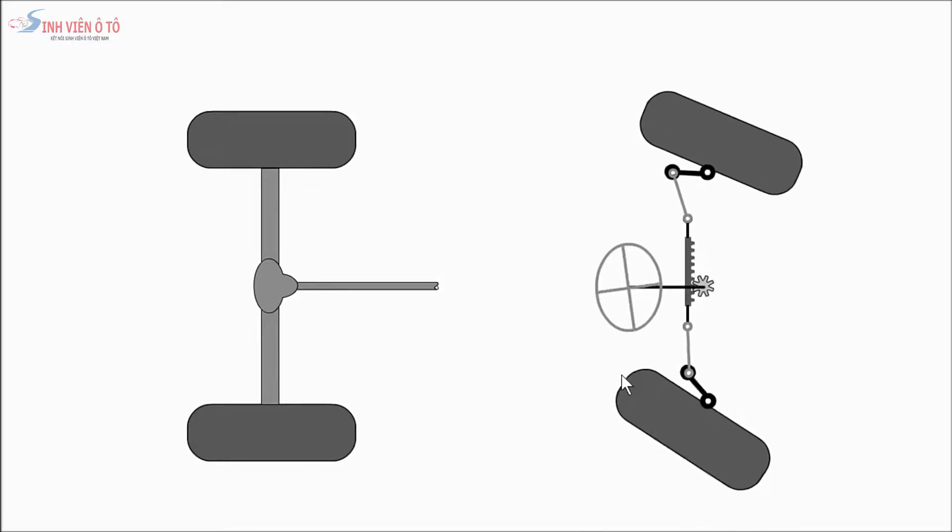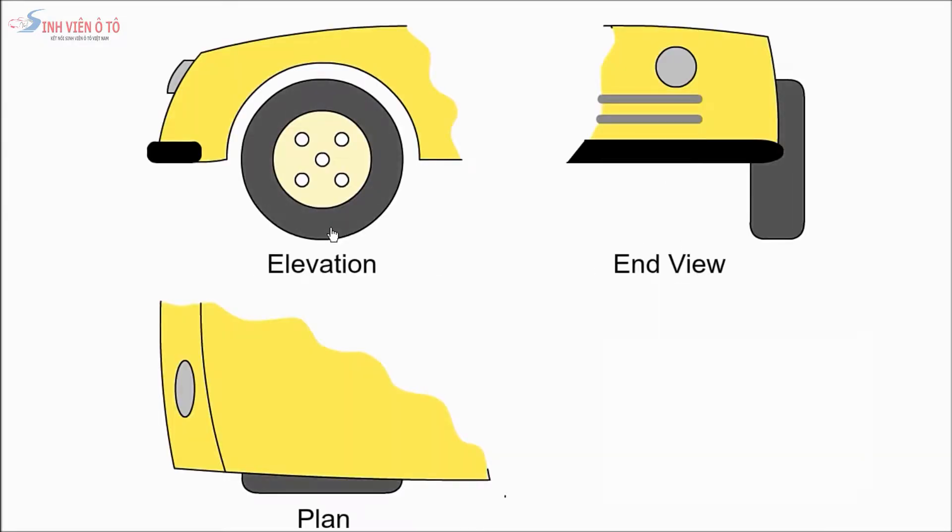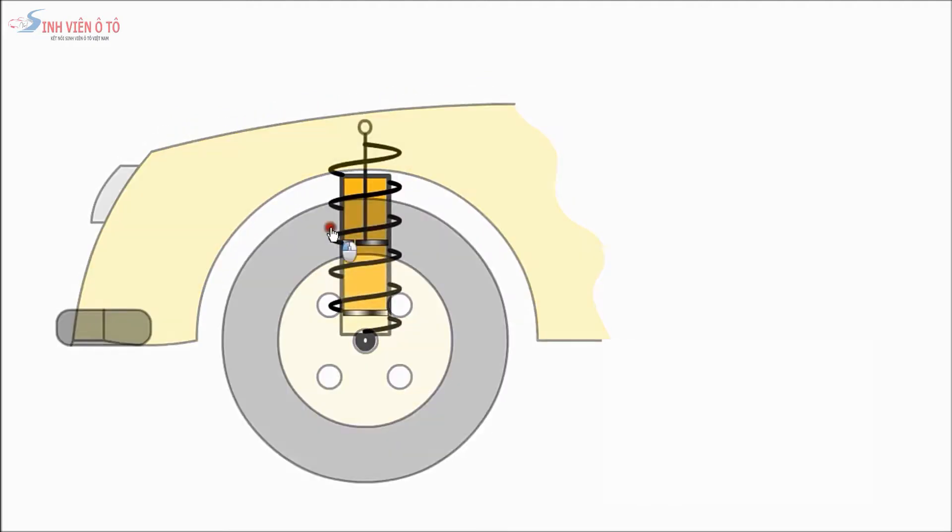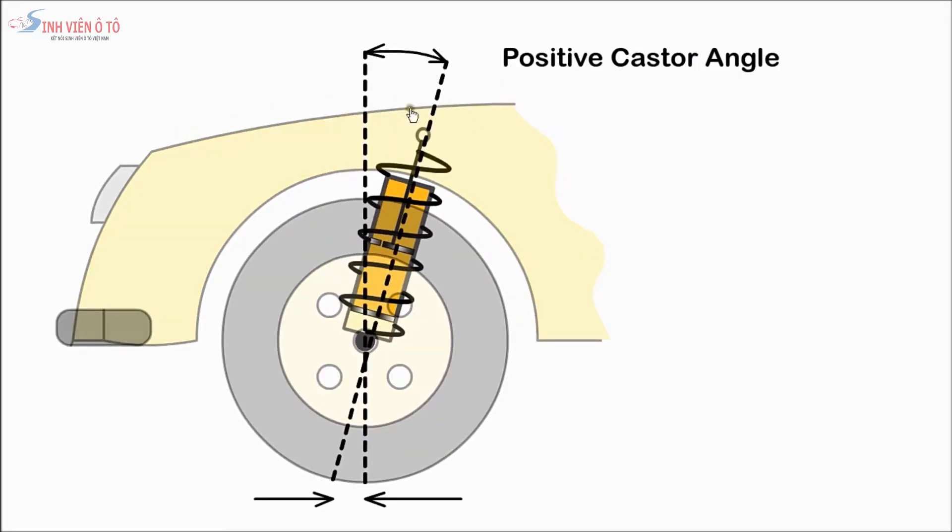Caster is the angle between a line extending through the steering pivot axis and a vertical line through the center of the wheel. When the steering pivot axis meets the road in front of the wheel contact point, it results in an inbuilt tendency to travel in a straight line.